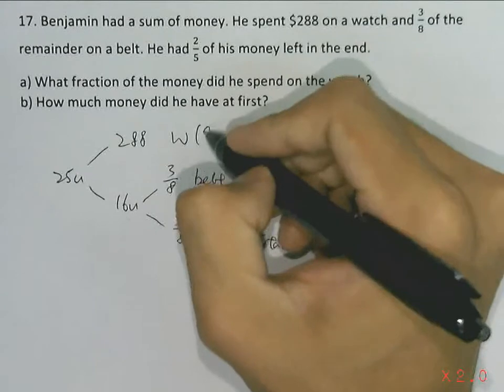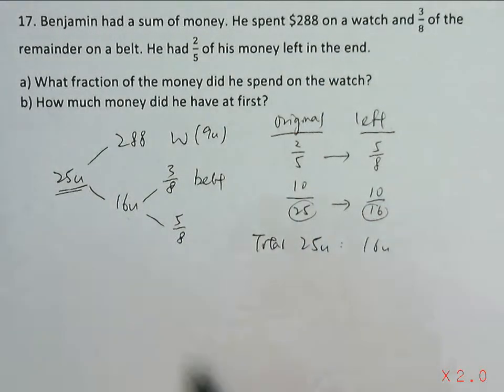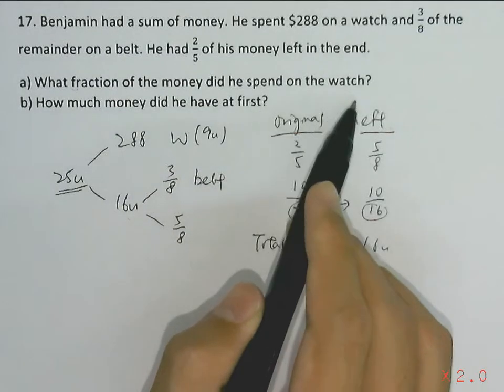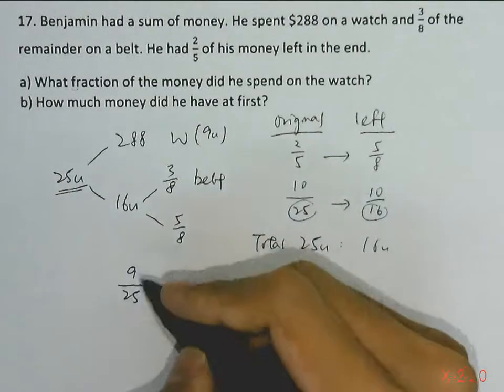The fraction of money he spent on the watch will be 9 units out of 25 units. So that's our answer for part a.